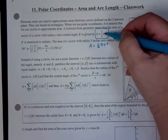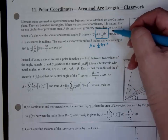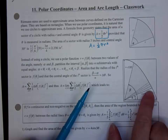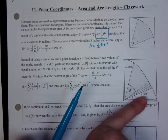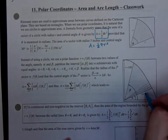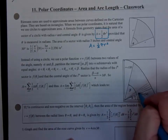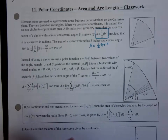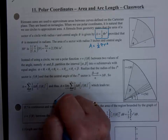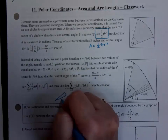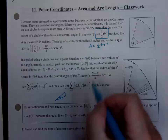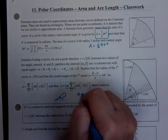No matter what the angle is, it's one-half theta r-squared. What you have to do is think about dividing the region into tiny, microscopically thin slices of pizza. Each one has a change in theta — the angle is going to be a dθ. We have this tiny little slice of pizza with radius r and angle theta.